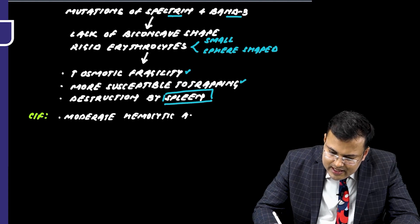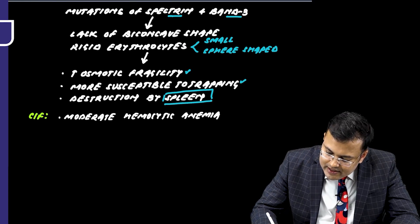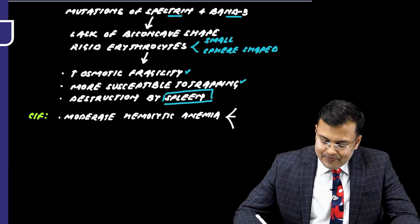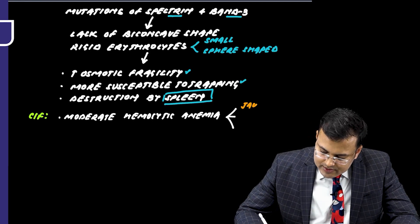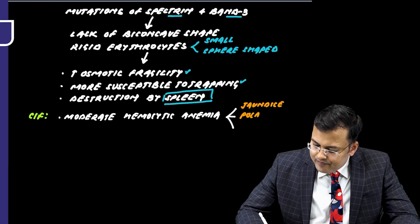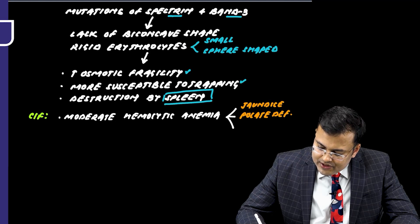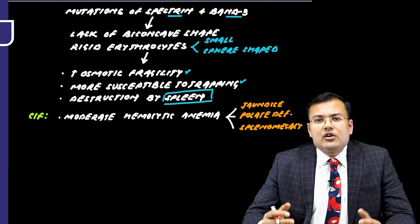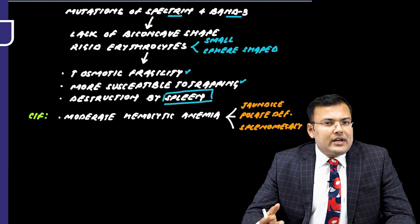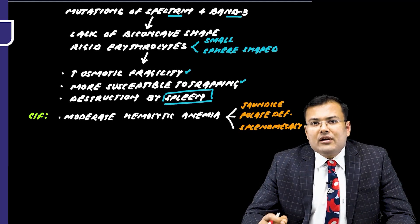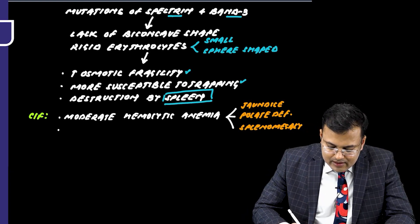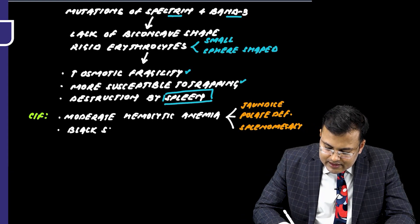Because of this hemolytic anemia, patients develop jaundice, folate deficiency, and splenomegaly. Additionally, due to chronic hemolysis, there is an increased risk of pigmented gallstones — specifically black stones — in hereditary spherocytosis.